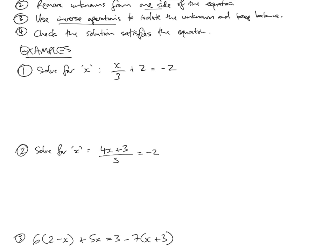Solve for x: x over 3 plus 2 is equal to negative 2. We've got no brackets here, so we don't need to do step 1. Step 2 is remove unknowns from one side — you only do that if you've got unknowns on both sides. I've only got the unknown x on the left-hand side, so I don't need to worry about step 2. So we're up to step 3: using inverse operations to isolate the unknown and keep balance.